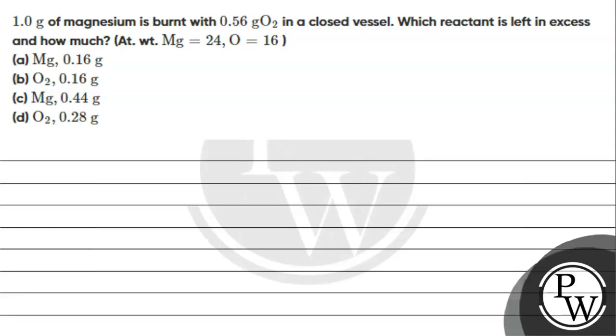Hello, let's read this question. The question says, 1 gram of magnesium is burnt with 0.56 gram of oxygen in a closed vessel. Which reactant is left in excess and how much? Atomic weight of magnesium and oxygen is given. Okay.